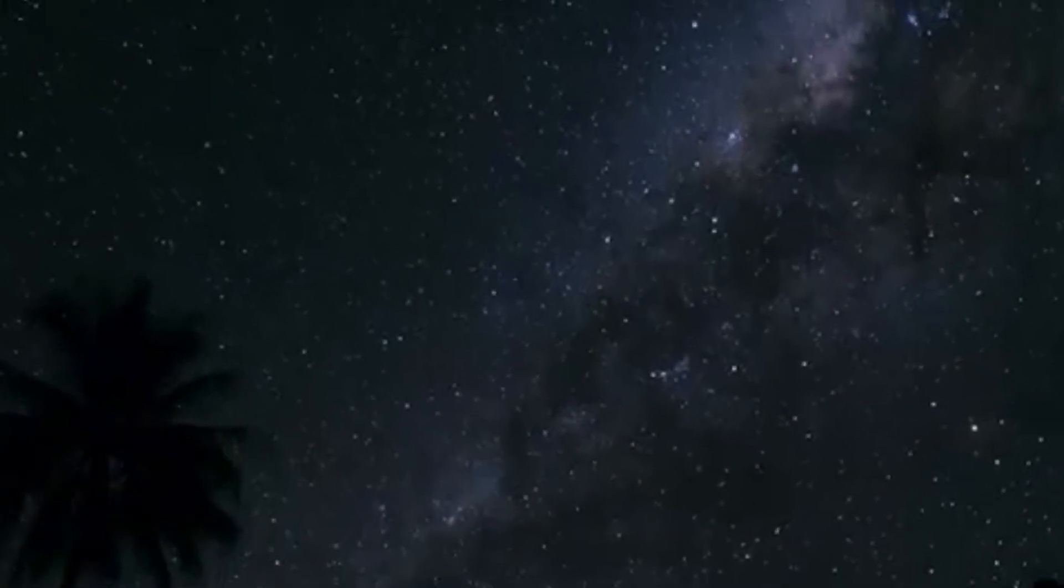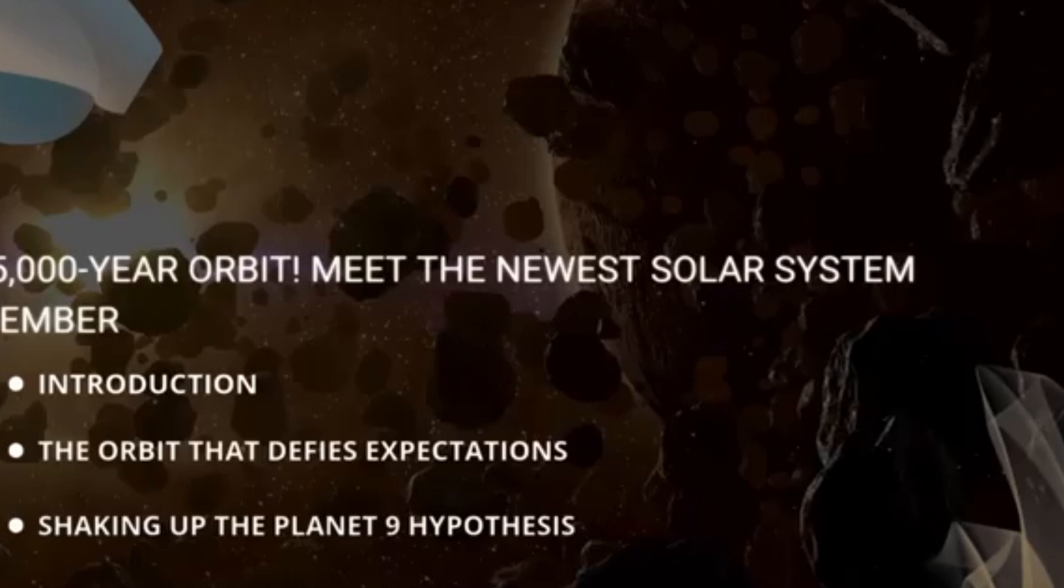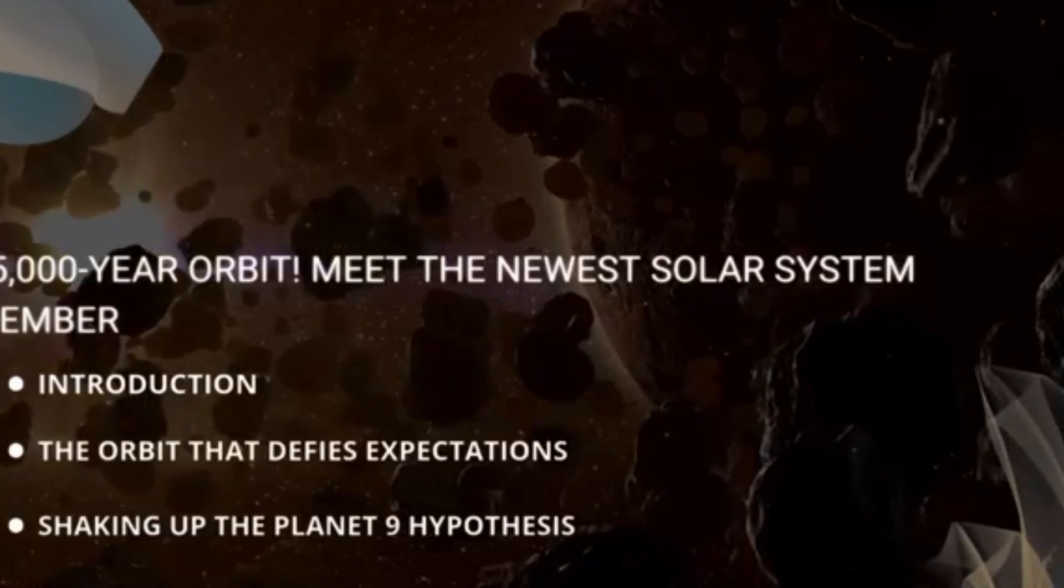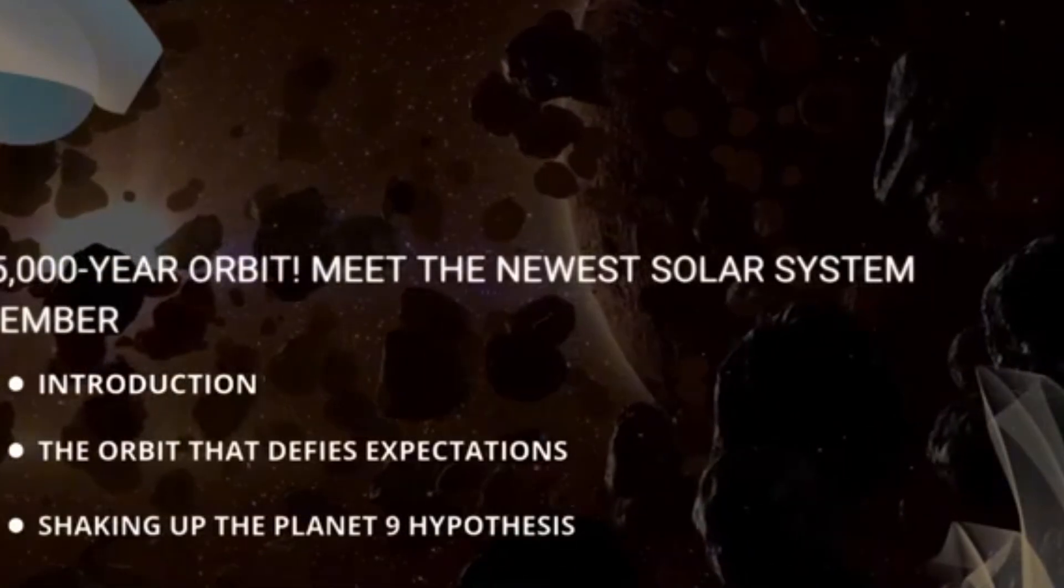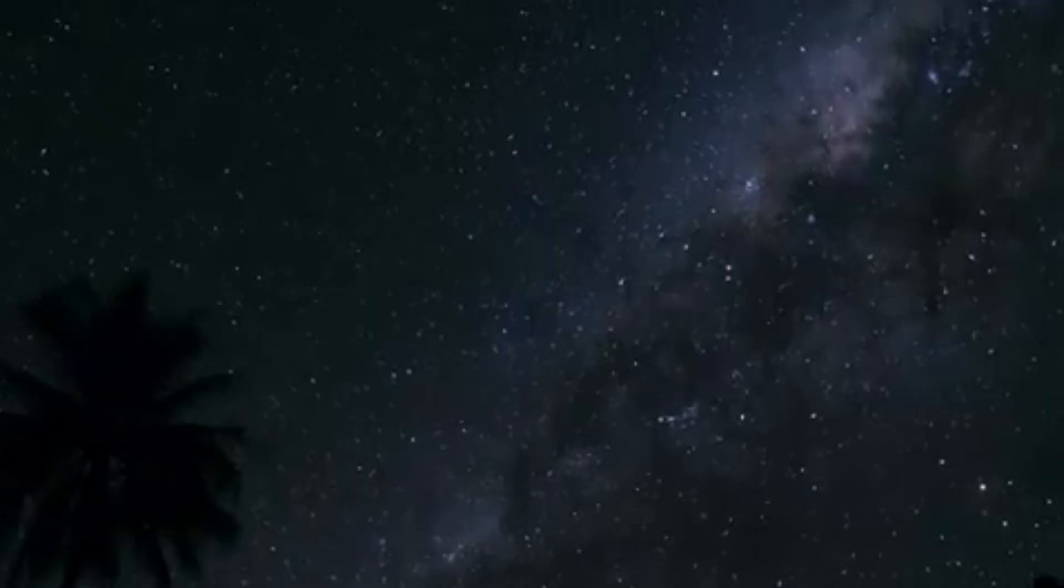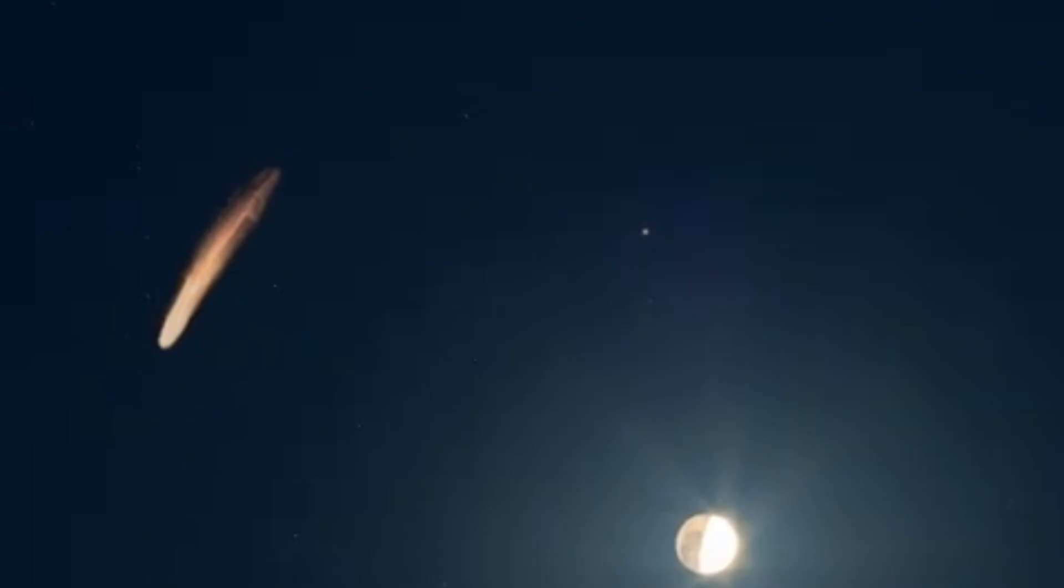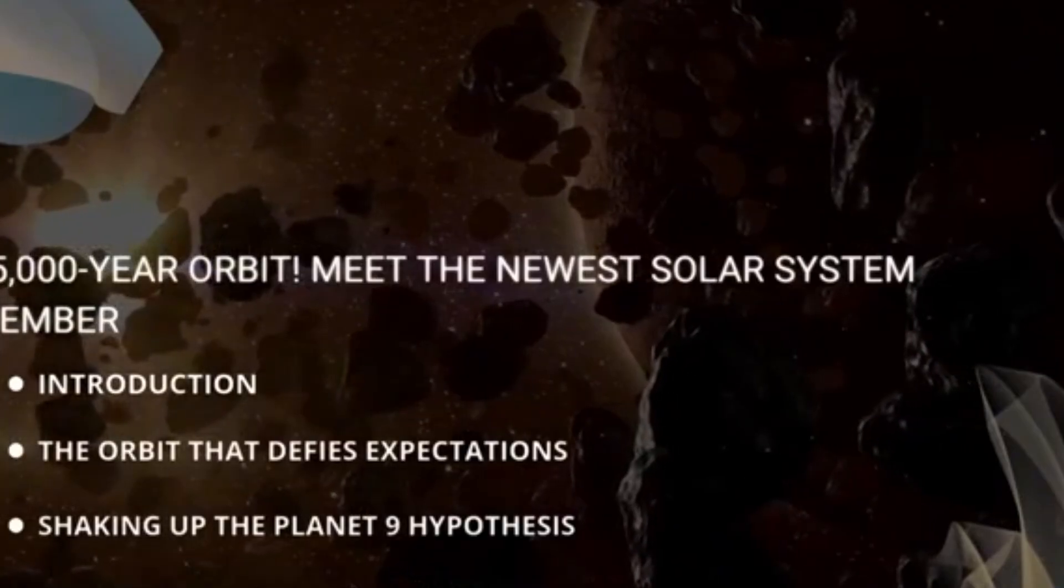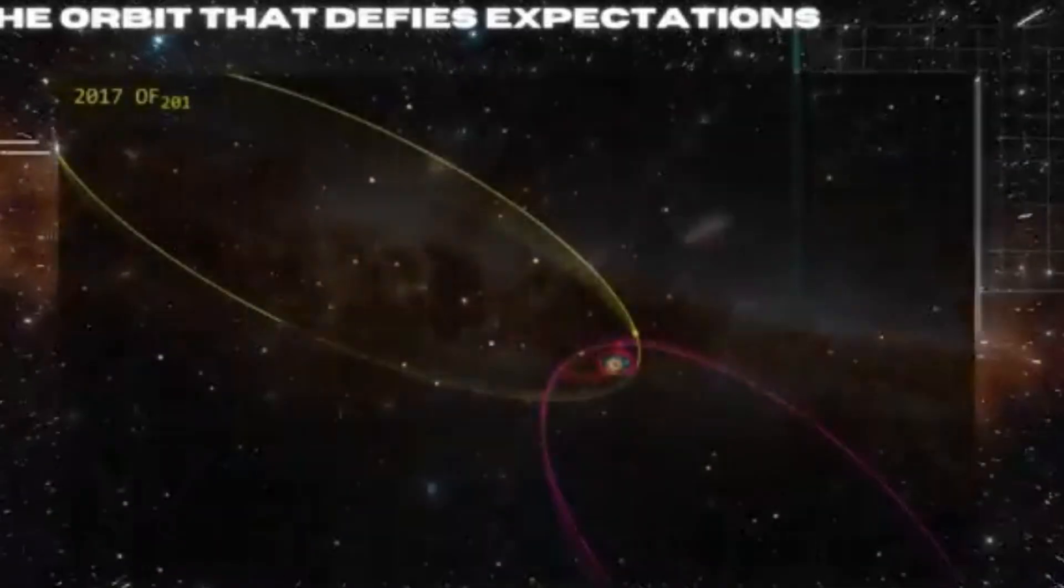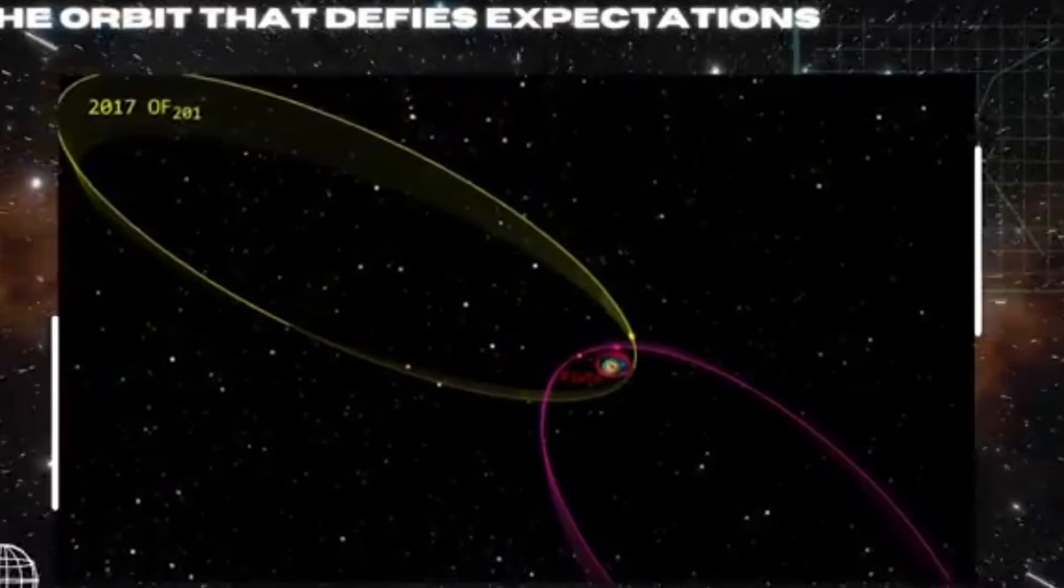And similar to the Oort Cloud, the Kuiper Belt is also considered the home of many comets and a reservoir of countless chunks of rock. In fact, it took until the early 1990s before the actual existence of this ring was proven, and it still holds many unsolved mysteries for experts.